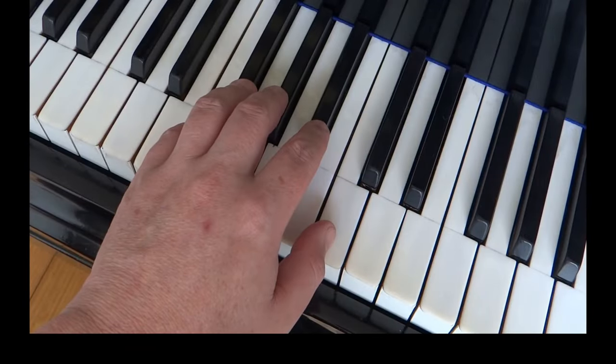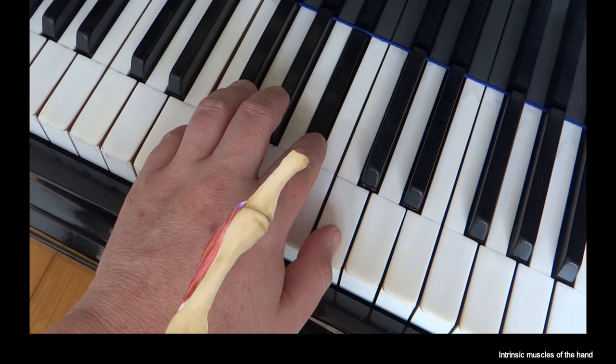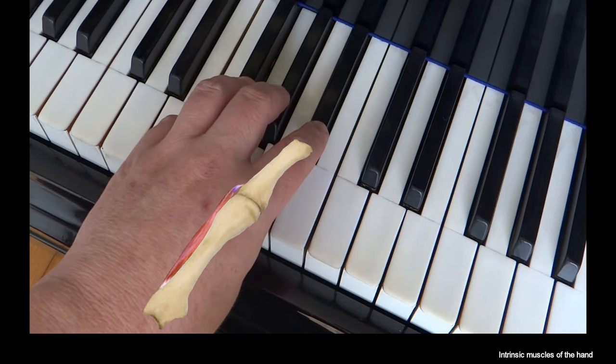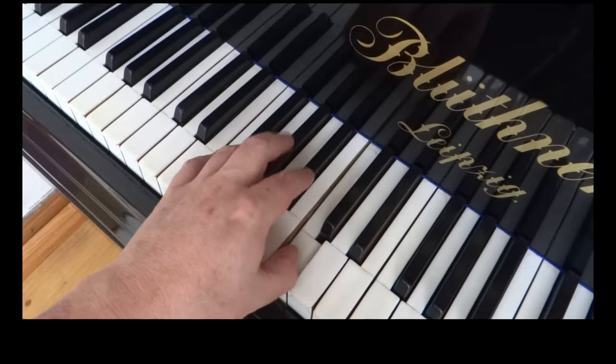Yes, the action of the thumb in scales is complex and more athletic than the other fingers. When the thumb is correctly supporting the rest of the passing hand, the next finger in the scale is free to move and target the surface of the assigned key.